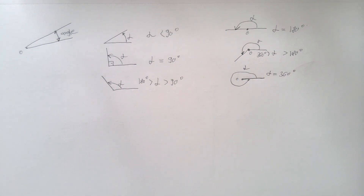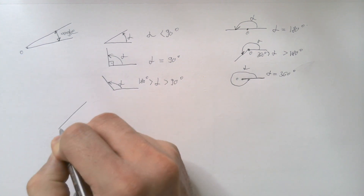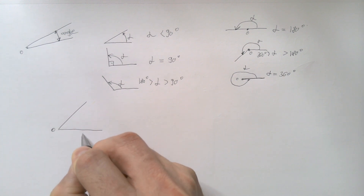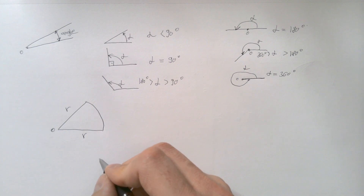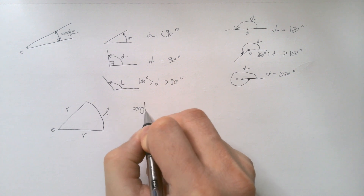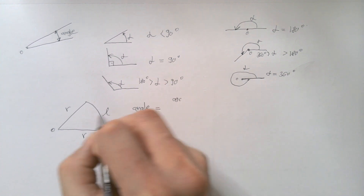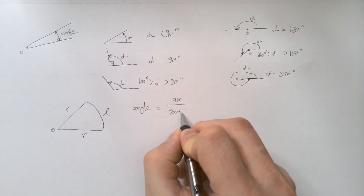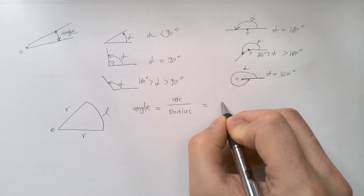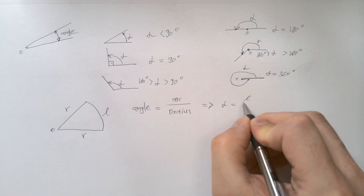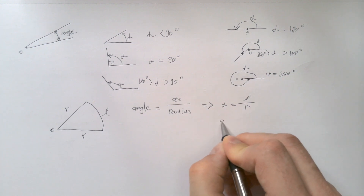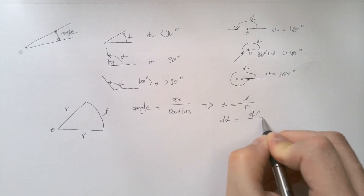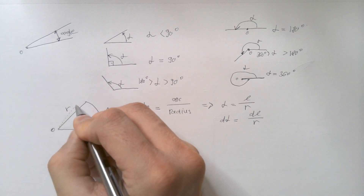How do we quantify angles? Well, if I have these two rays originating from O, and the length of these arms is R, then I can define this arc length, let's call it L, and the angle is equal to this arc divided by the radius. Or, angle alpha is therefore equal to L divided by R. How would one find an infinitesimal increment of an angle? Well, if you differentiate this, D alpha ends up as DL over R.